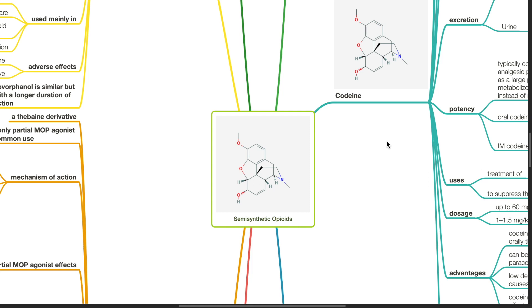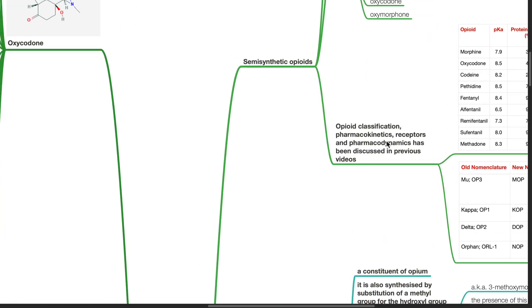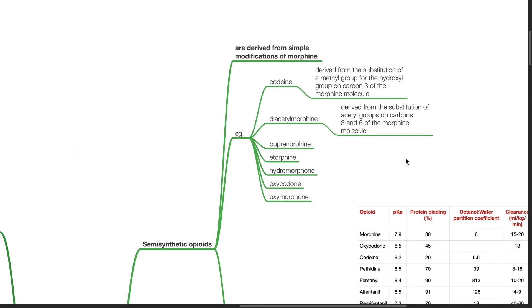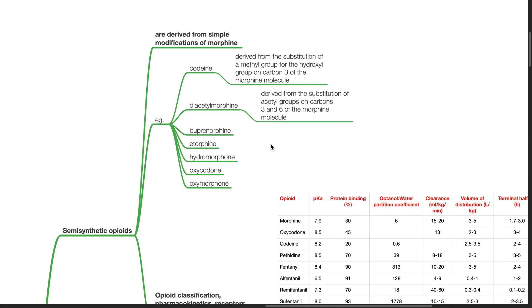Good evening, Dr. Phil here. Today we'll be discussing semi-synthetic opioids. Semi-synthetic opioids are derived from simple modifications of morphine. Examples include codeine, diacetylmorphine, buprenorphine, etorphine, hydromorphone, oxycodone, and oxymorphone.